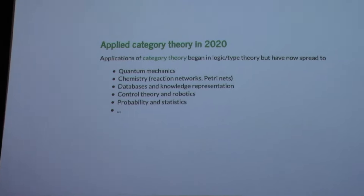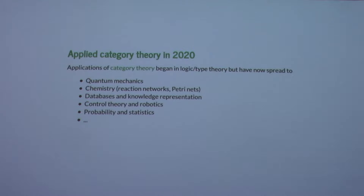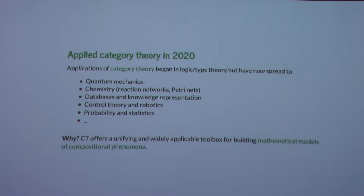As far as I know, applications of category theory, at least outside of pure math, started in logic and programming language theory. But by now they've spread to all sorts of different areas — quantum mechanics, databases, knowledge representation, control theory, robotics, probability and statistics, just to name a few. I think the reason for this is that category theory really offers a unifying perspective on how to build mathematical models for things that are compositional. That's more like a premise for this work.